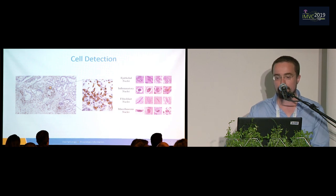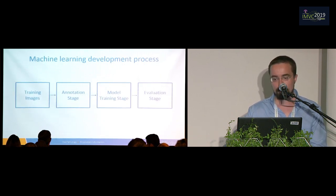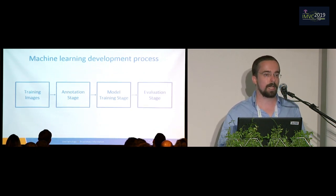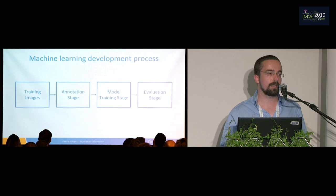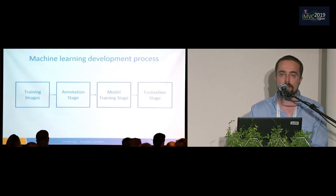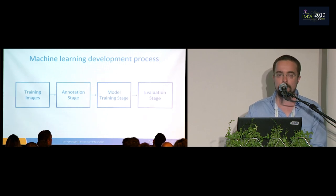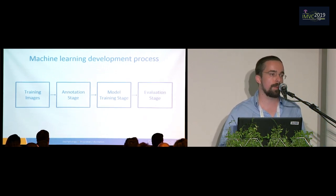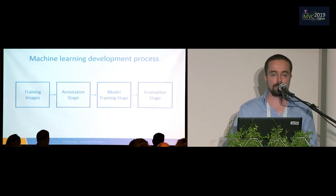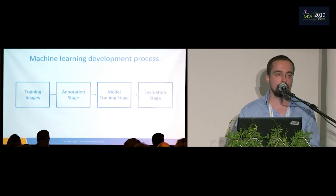Let's say we have a pathologist that wants to be able to detect a specific type of cells. Typically, the process to develop something like this will be: first you have an annotation stage, then you train a model on the annotated data, and then you inspect the quality of the model. Maybe you'll go back and decide to train another model, or maybe you'll go back and decide that you want to do more annotation. And the thing we realize is that most of the time is going to be spent in the annotation stage.